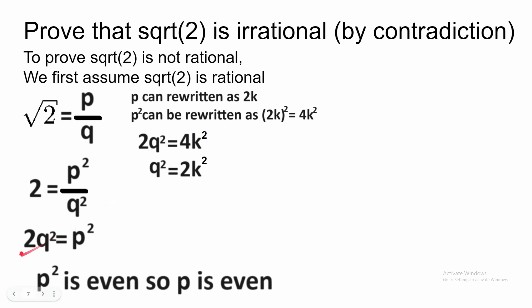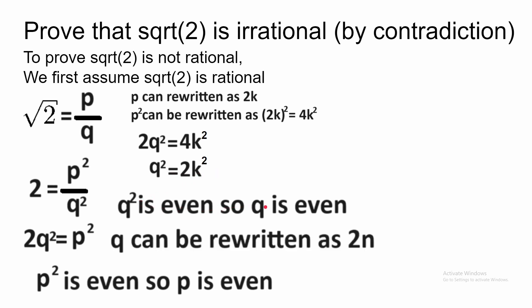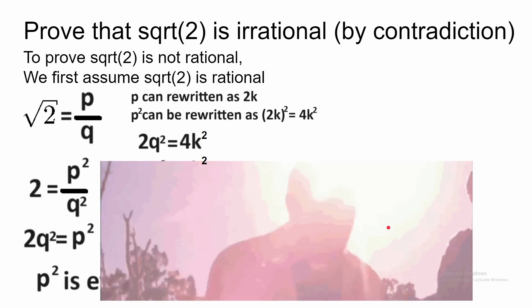Now, we can take 2Q squared equals P squared and rewrite that as 2Q squared equals 4K squared. Divide 2 from both sides, and we find that Q squared is equal to 2K squared. Since K is an integer, K squared is an integer, and 2 times K squared must be even. Therefore Q squared must also be even, because Q squared can be written as 2 times an integer. Since Q squared is even, Q must also be even. Therefore Q can be written as 2N, where N is any integer.